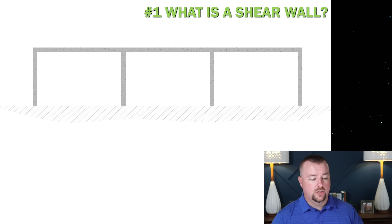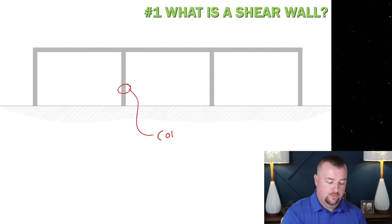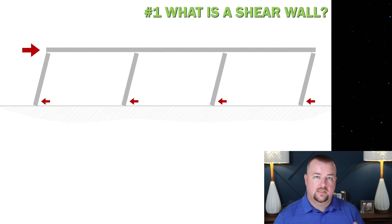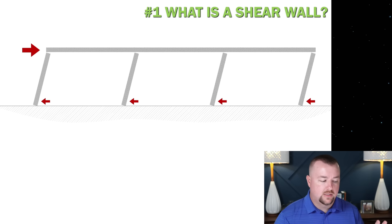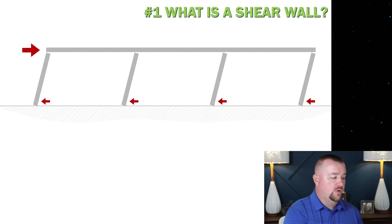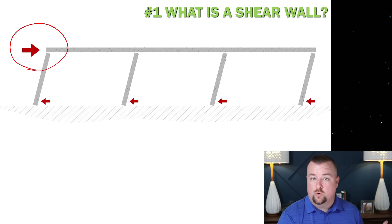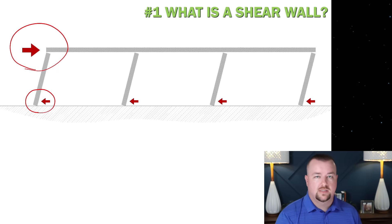So what is a shear wall? I've drawn a very simple drawing showing columns and either a slab or a beam. If you have a force pushing against your little building, without any other structural elements, this building is going to list over — it's going to lean. The reason is the wind force, the lateral force, comes from one side, but the bottom of all your columns are connected to the foundation, so they resist, which causes the whole thing to lean over like a house of cards.